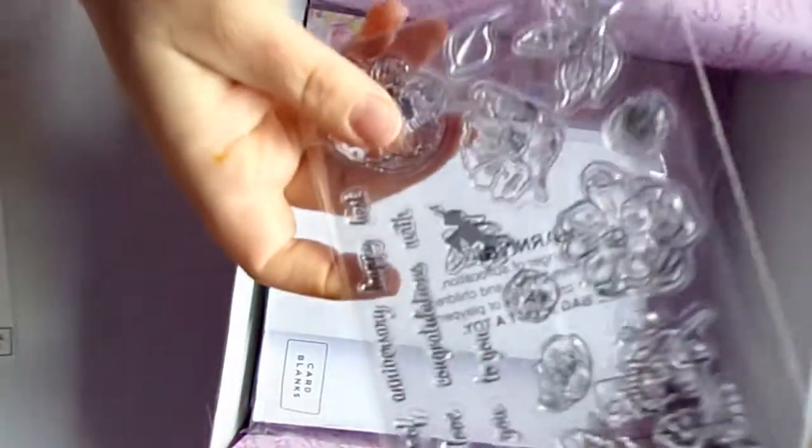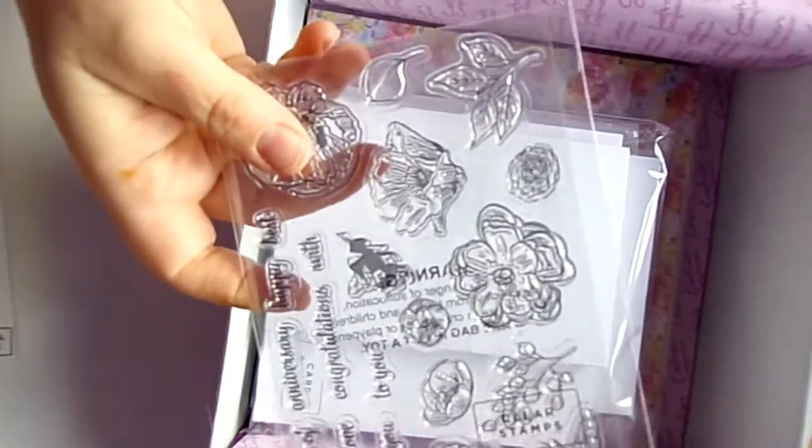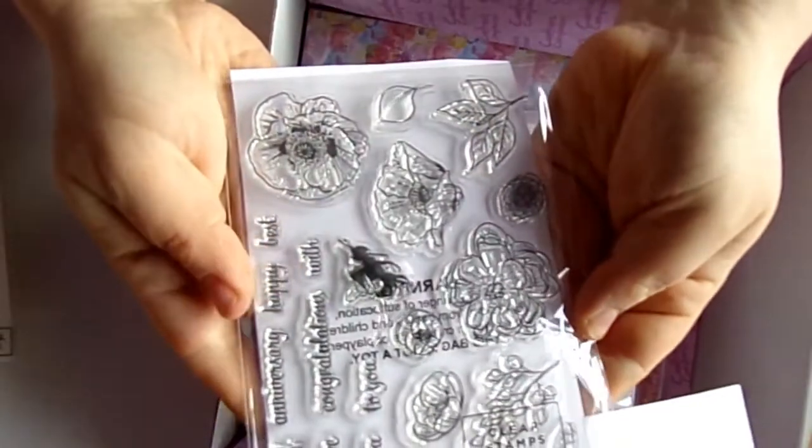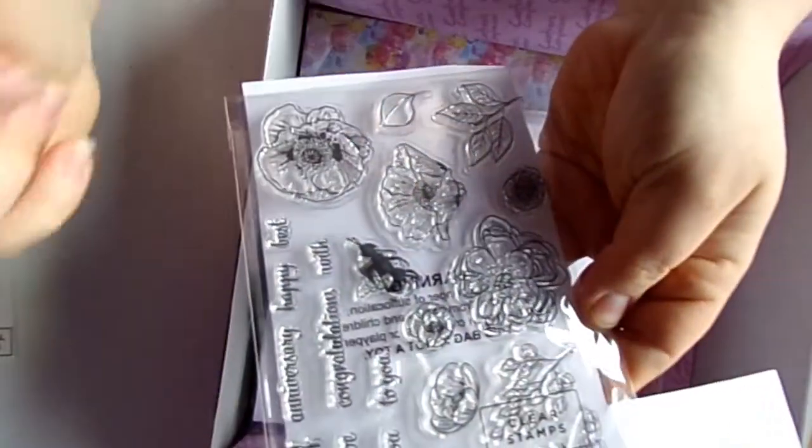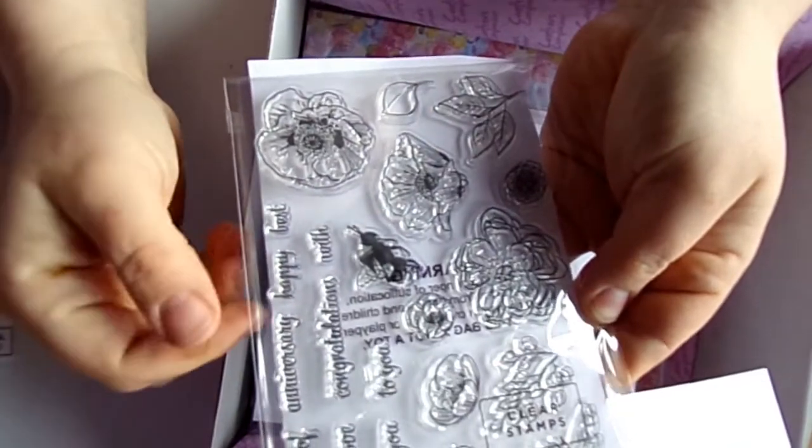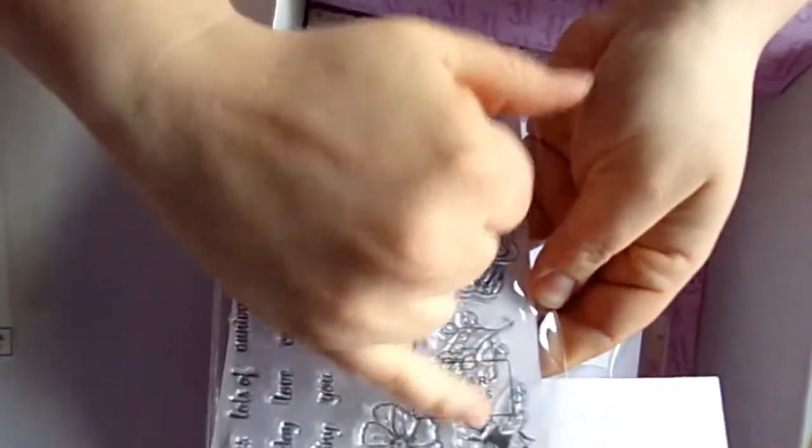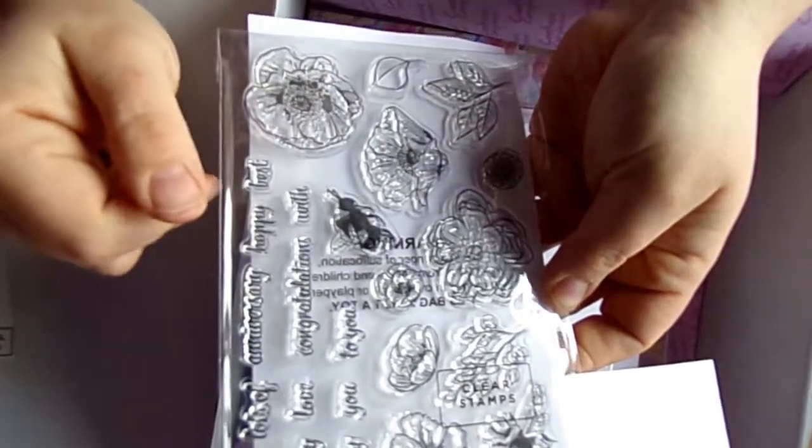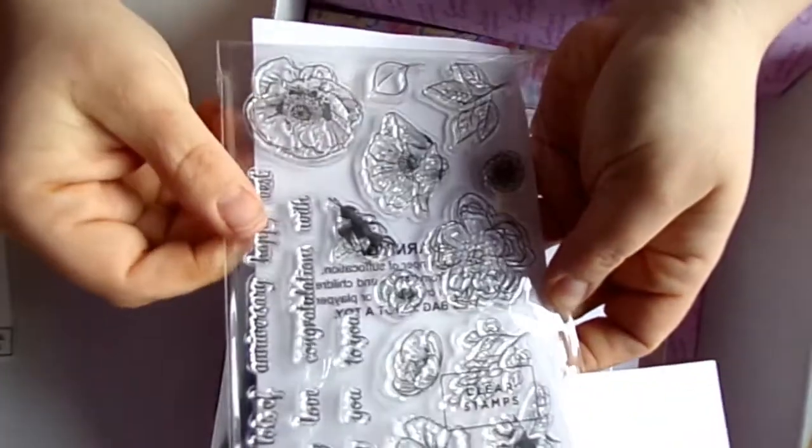See if I can find something to put behind that so we can see them a little bit better. There we go, might be able to see them a little bit better now. So you've got some nice flowers and some sentiments to be going on with your projects, like a little bumblebee. There'll be some nice cards I'll be able to make with that.